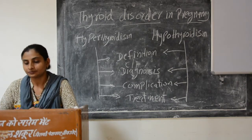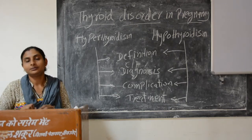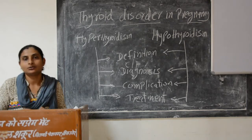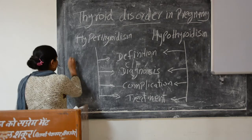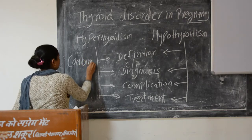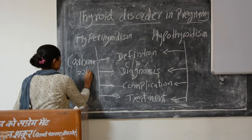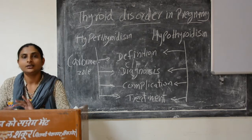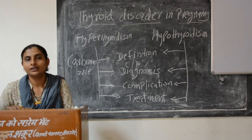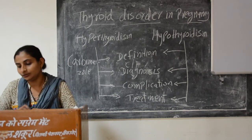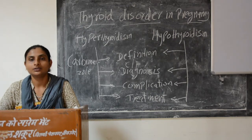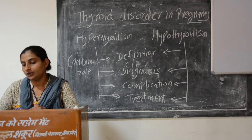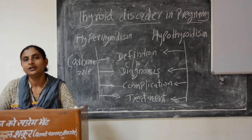Let's look at the treatment. We first use antithyroid drugs for medical treatment. The first drug is Carbimazole, given orally. The usual dose is 30 to 60 mg, and after thyroid function becomes normal, it is maintained at 5 to 15 mg per day.